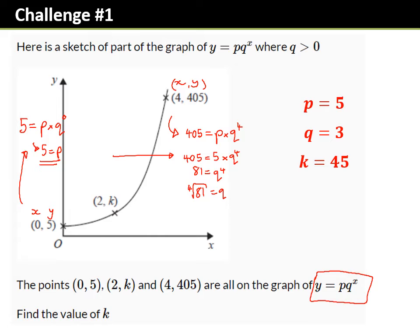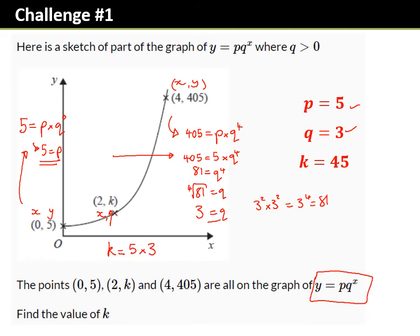The fourth root of 81 is 3. If you think: 3 squared is 9, times by 3 squared is 9 × 9 = 81, so 3^4 = 81, so the fourth root of 81 is 3. So those are the two values p = 5 and q = 3. Then we're given when x = 2, work out k: k = p × q^x = 5 × 3^2 = 5 × 9 = 45.